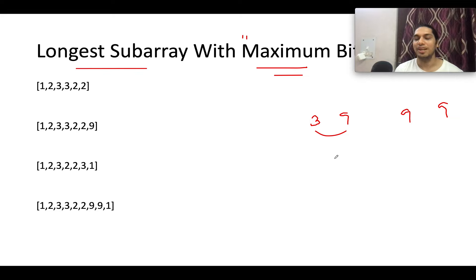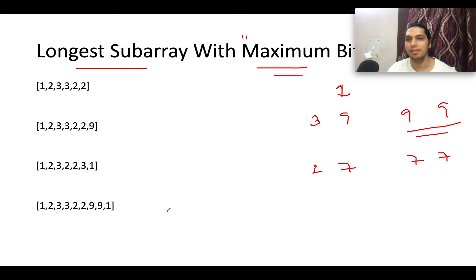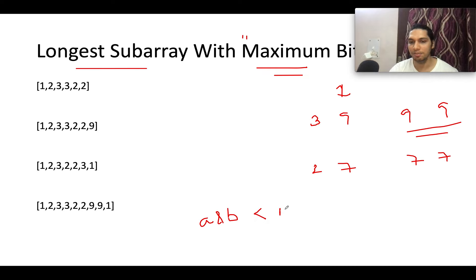Similarly, the bitwise AND of 2 and 7 would be much lower than the bitwise AND of 7 and 7. The bitwise AND of 9 and 9 is 9, while the bitwise AND of 3 and 9 is 1. The takeaway is: whenever you have two numbers A and B, the bitwise AND between them will be lower in value than the maximum element between A and B. Remember this point — and the algorithm is decoded.